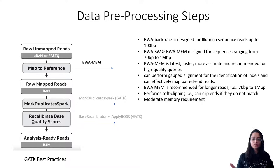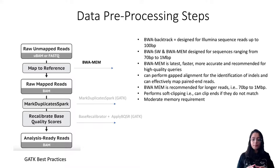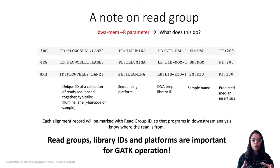For mapping reads to the reference genome we use BWA MEM. BWA stands for Burrows-Wheeler Aligner. BWA has three algorithms: BWA-backtrack, BWA-SW, and BWA-MEM. BWA-backtrack is designed for Illumina reads up to 100 base pairs; BWA-SW and MEM are for longer sequences from 70 bp up to 1 megabase pair. We use BWA-MEM because it is faster and more accurate, supports gapped alignment for indel identification, handles paired-end reads, performs soft clipping, and has moderate memory requirements.